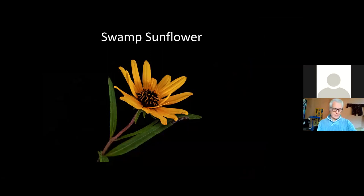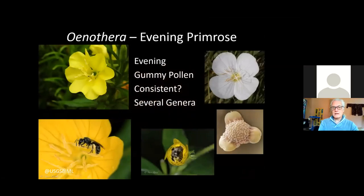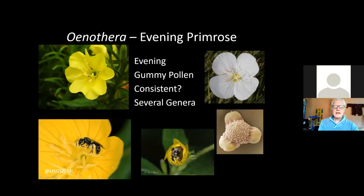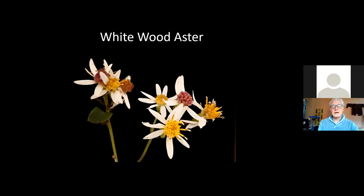You have a lot of fall composite things from goldenrods to the Helianthus group that support a large list of things like Andrina helianthiformis. Evening primrose — why does it bloom in the evening? Because it has bees that only go to evening primrose and they only come out in the evening after competitors have gone to bed. They have weird, super gummy pollen with viscid threads connecting them, and the bees have to modify their pollen-collecting hairs to accommodate this. Morning glories: same thing — another whole set of bees only come out in the morning, only use morning glories.